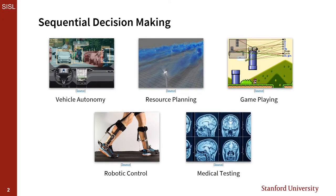Sequential decision problems are any problem that, in order to solve it, we need to consider how the action we take now will not only impact our immediate state, but the eventual sequence of actions we need to take to reach some goal. As humans, we solve sequential decision problems almost every day, whether deliberate sequences like cooking a meal or reflexive sequences like walking or playing a game.